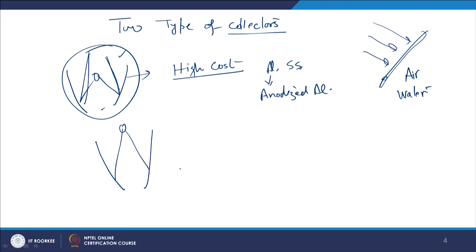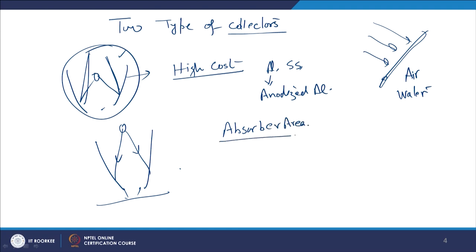The concentrating collector traps maximum energy from the sun. They also require a strong foundation because vibrations from wind may also occur. However, they have more absorber area and greater solar intensity compared to flat plate collectors.